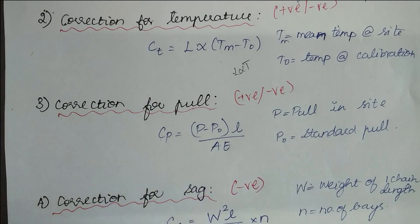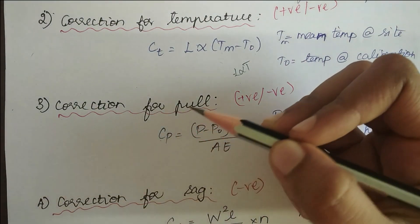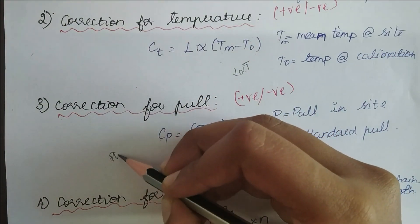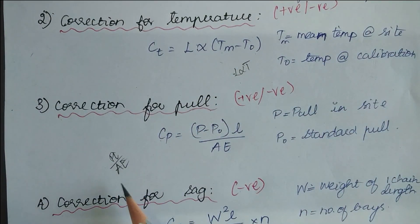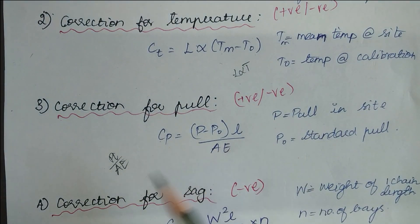This also can be remembered by the formula in solid mechanics which goes like the change in length due to pull is PL by AE. This is a simple formula. Everybody should know this formula. So you can remember this from this formula.